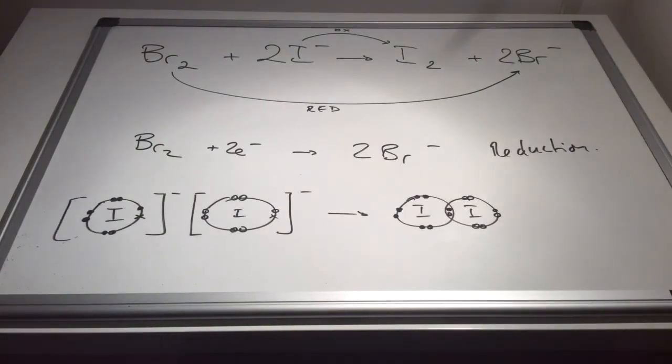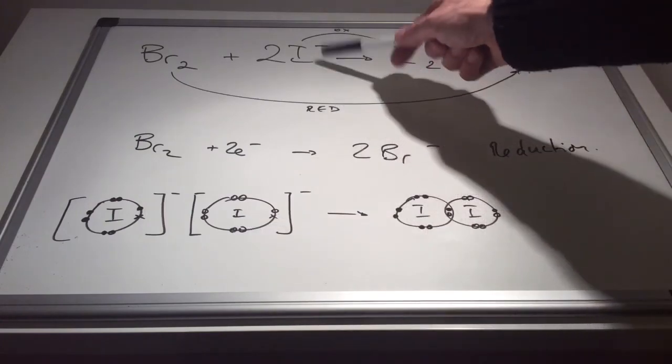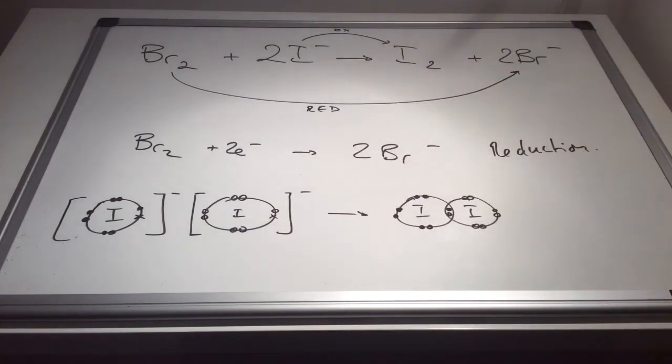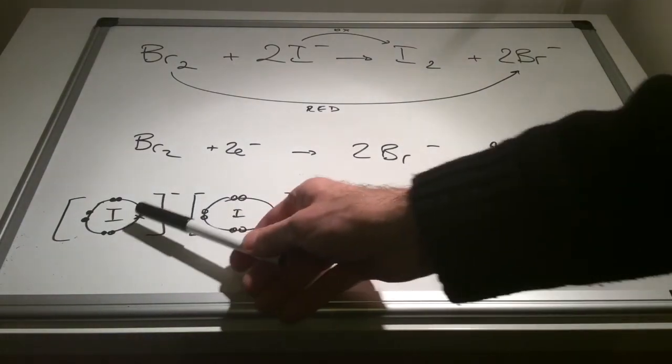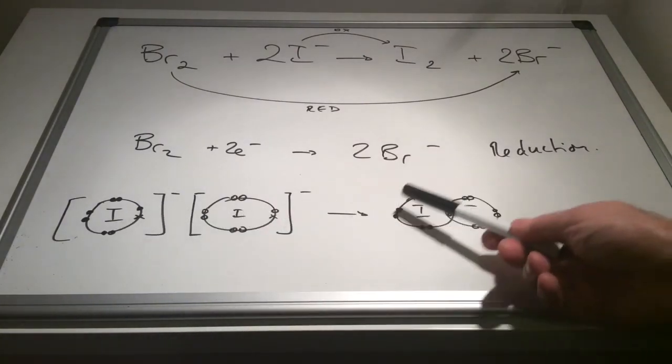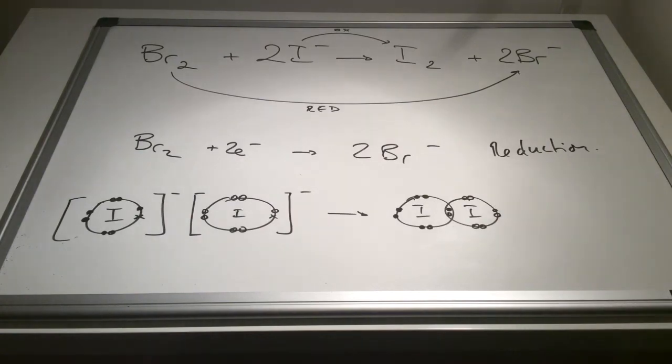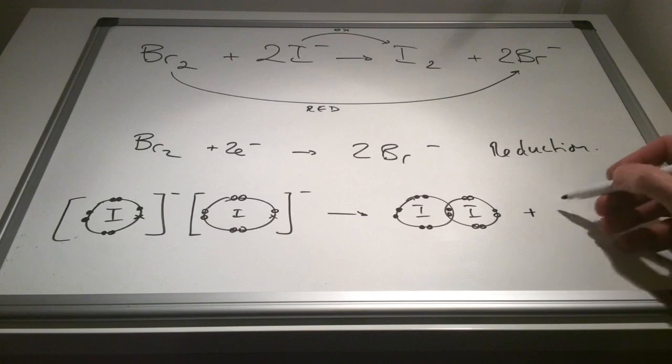I've drawn the dot and cross diagrams to help explain the oxidation process, which involves the iodine. We've got two separate iodide ions on the left, they are on the equation. And we're going to form an iodine molecule, a diatomic molecule. So to do that, these two iodide ions need to lose these extra electrons, these crosses in the diagrams. And then that would generate two separate atoms, and then we can form this diatomic molecule. So those two extra electrons are going to be on the right hand side of the equation.